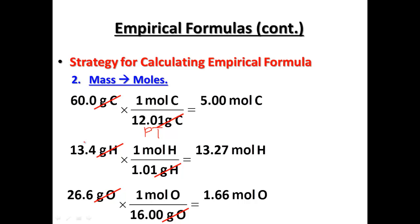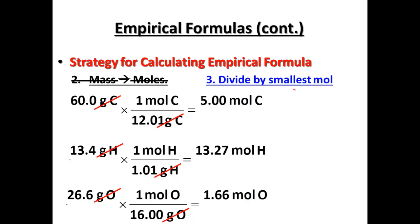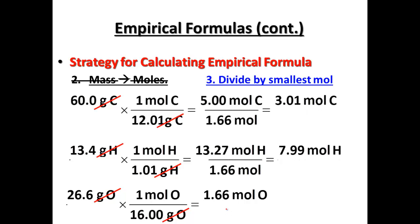Now we're left with moles of each of our substances: 5.0 moles of carbon, 13.27 moles of hydrogen, and 1.66 moles of oxygen. Our next step says to divide by the smallest mole number. We have 5, 13.27, and 1.66 — so 1.66 is the smallest mole number, and we're going to divide each one by 1.66. When we divide each by 1.66, it turns out that we have 3.01 moles of carbon, 7.99 moles of hydrogen, and 1.00 moles of oxygen.